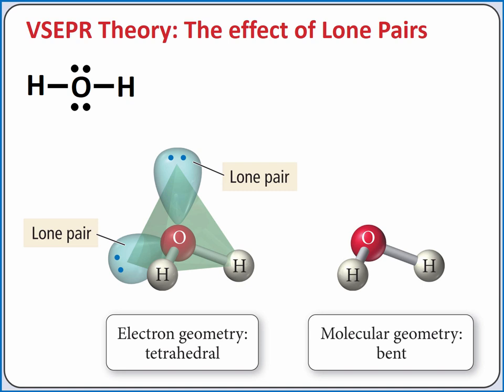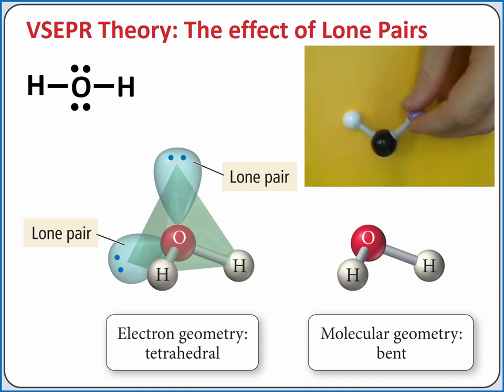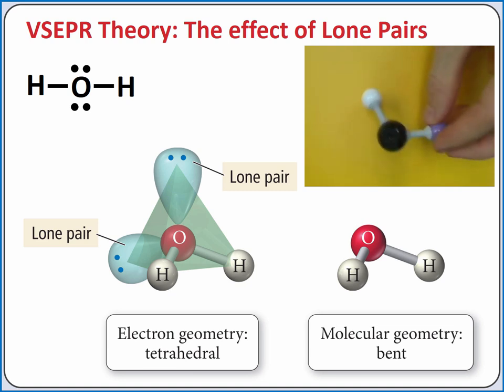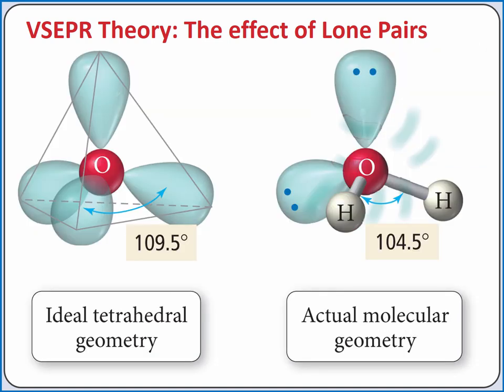If we have two lone pairs of electrons and two bonding groups, the molecular geometry is called bent. Water, or H2O, has a bent molecular geometry. Here again, our lone pairs of electrons repel the single bonds more, so that the bond angle is 104.5 degrees instead of 109.5 degrees.